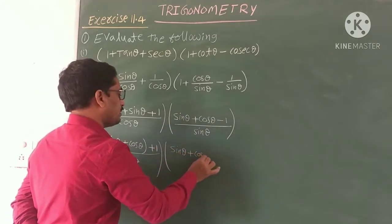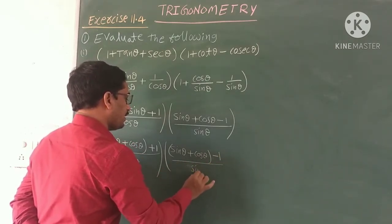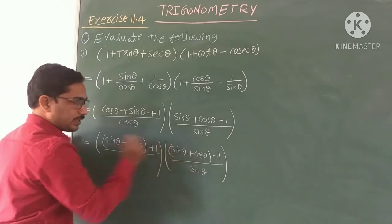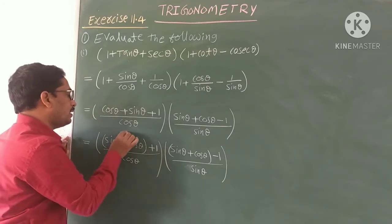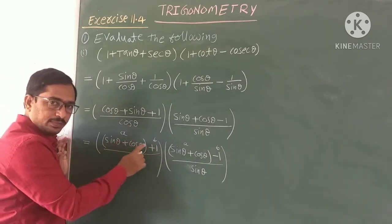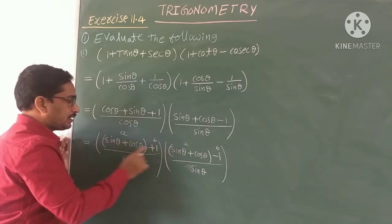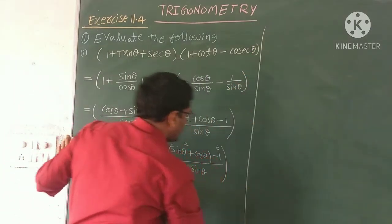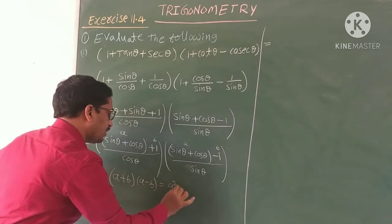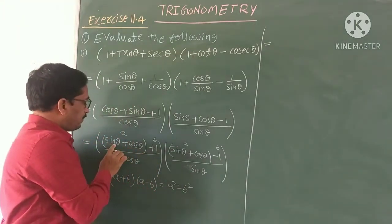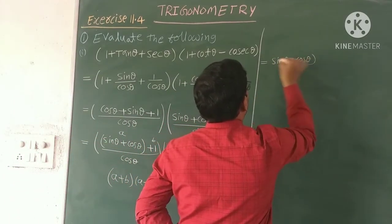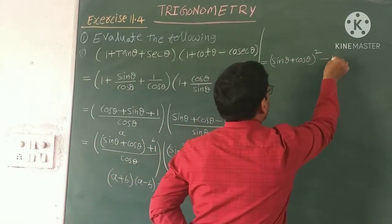We get (sinθ + cosθ + 1)/cosθ × (sinθ + cosθ - 1)/sinθ. Observe the numerators — (sinθ + cosθ + 1) and (sinθ + cosθ - 1). This is in the form (A + B)(A - B) where A = sinθ + cosθ and B = 1. So the numerators multiply as A² - B² = (sinθ + cosθ)² - 1².